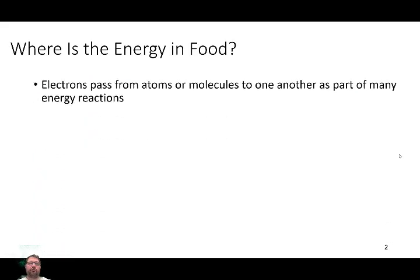So where is the energy in food? Energy in food, we've talked about this many times, is bond energy. Energy is in two forms, potential energy and kinetic energy. And food is potential energy. It's bound energy, stored energy. When you eat the food, you break bonds. When you break bonds, you get energy. But what's that process look like from a molecular standpoint? That's what we're going to cover in the next few lectures.